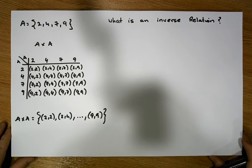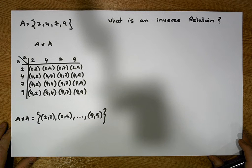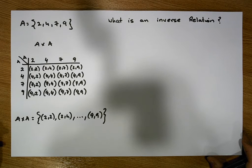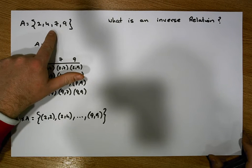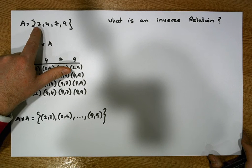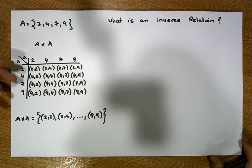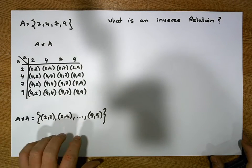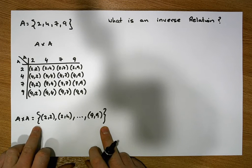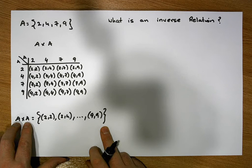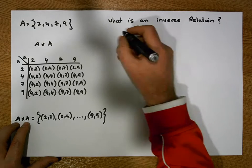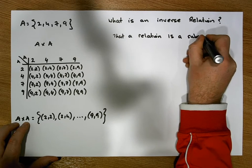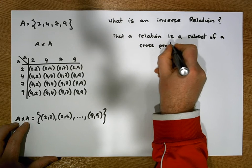So let's keep in mind, like the way we started off all the previous videos in this particular series, that we usually define a relation to be simply a subset of a cross product. Or more importantly, what we say is that a relation is built on a particular set. And that's all a relation is.